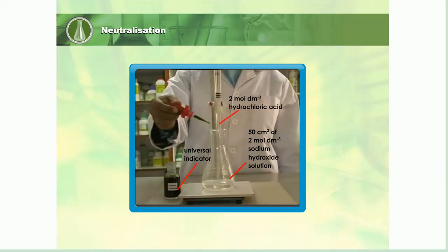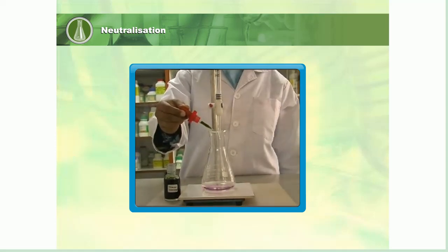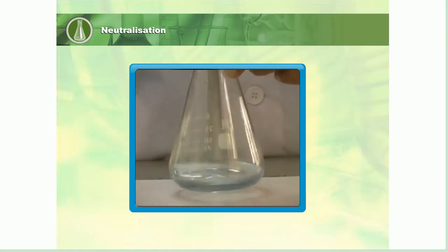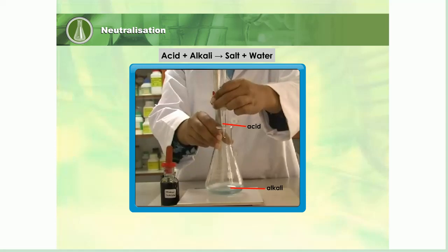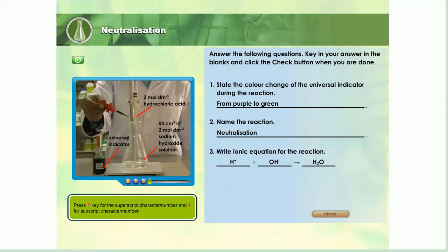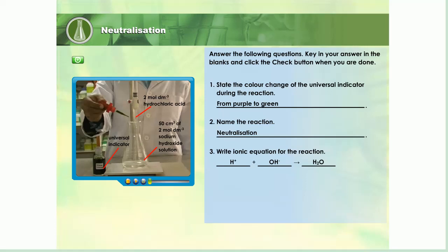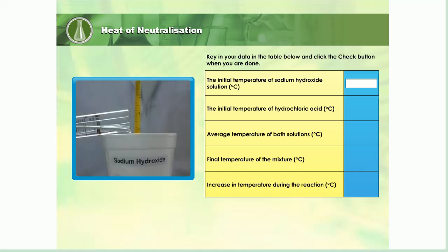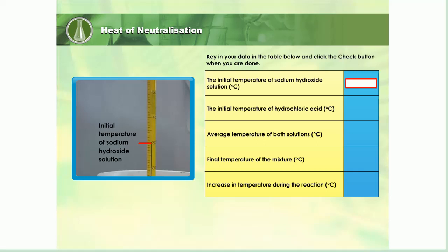Watch the video. Do you know how much heat is released during this reaction? Let's measure how much heat energy is released during the reaction. Watch the video and answer the following questions. 50 cubic centimeters of 2 mole per cubic decimeter sodium hydroxide solution is poured into a polystyrene cup. The initial temperature of the solution is measured with a thermometer. Record the reading in the table provided.